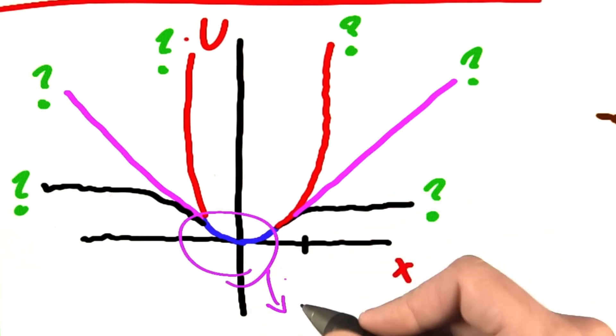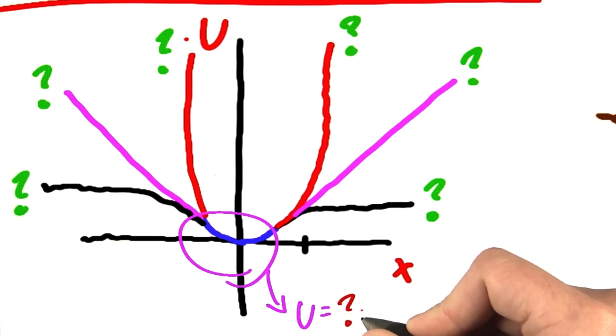So for this region, in here, potential energy is equal to something times displacement squared. And I don't really care what that something is.